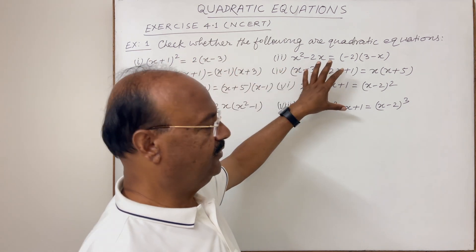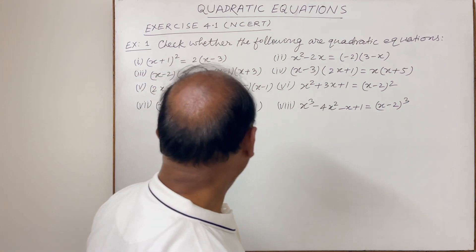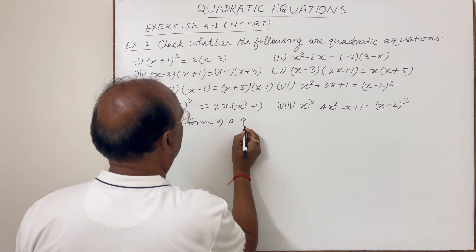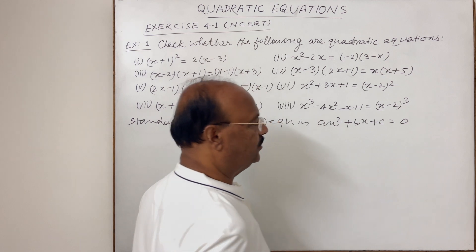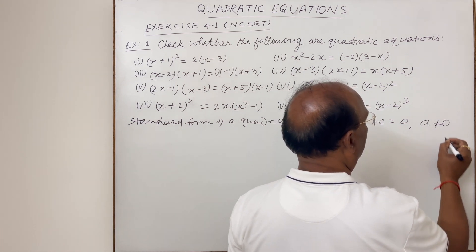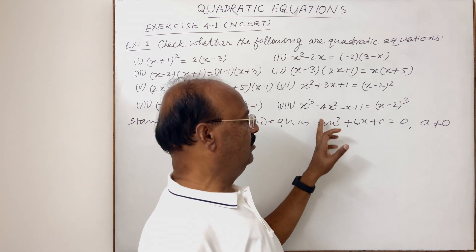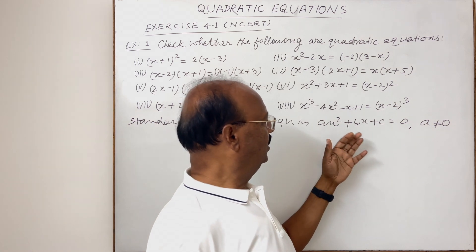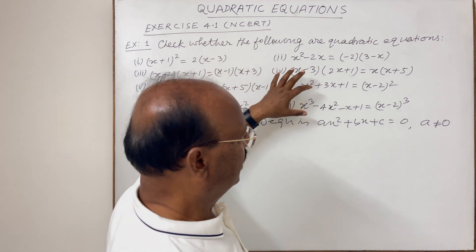As we discussed in the previous video on introduction of quadratic equations, the standard form of a quadratic equation is ax² + bx + c = 0, where a, b, and c are real numbers. Importantly, a must not be equal to 0, because if a is 0 then the x² term vanishes and the equation reduces to a linear equation. So a quadratic equation must have degree 2.